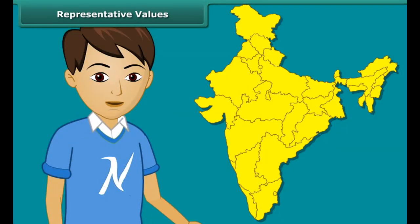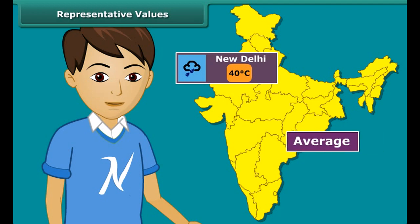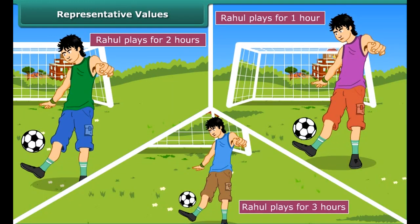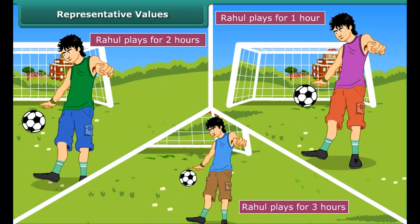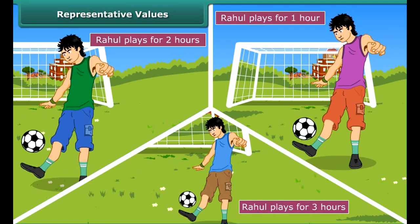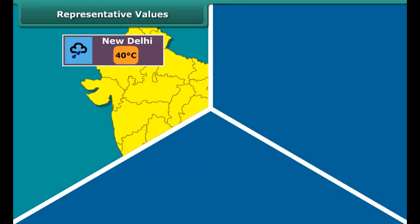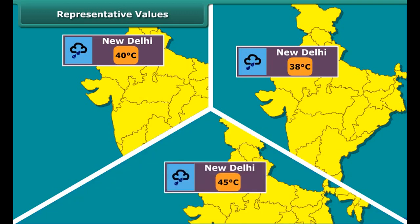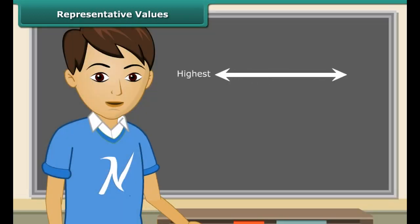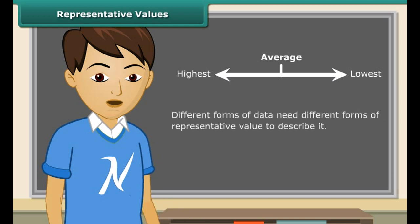We can put many kinds of data in tabular form. Rahul spends on an average about 2 hours daily for his outdoor games. The average temperature of New Delhi at this time of the year is about 40 degrees Celsius. Have you noticed the word average? By average, we understand that Rahul usually plays for 2 hours — on some days he may play for fewer hours, and on other days he may play longer. Similarly, the average temperature of 40 degrees Celsius means the temperature of New Delhi is around 40 degrees Celsius — sometimes less, sometimes more. Thus, average lies between the highest and the lowest value of the given data.